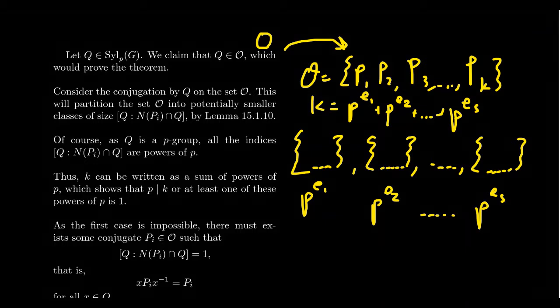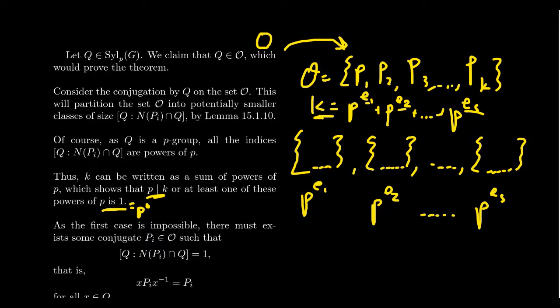Now, if each of these powers is at least one, then that sum will be divisible by P, which means K is divisible by P. But we just showed that P cannot divide K — so that's a contradiction. Therefore, at least one of these powers of P must equal P to the zero, i.e., one of the Eᵢ must be zero. So at least one of these orbits has to be a singleton all by itself.